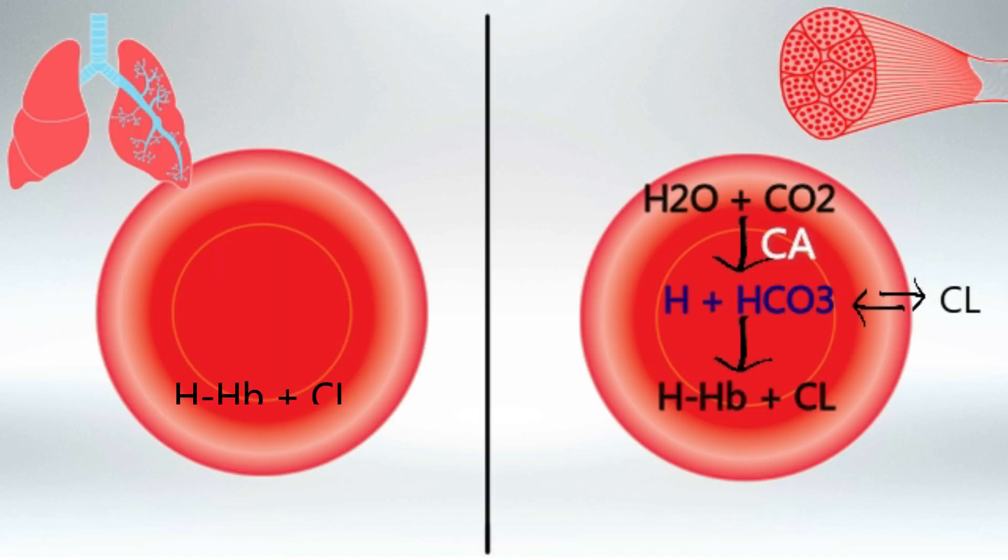The RBC will go into the lungs, and we will reverse the process. Hydrogen will be released from hemoglobin, and we call the release of hydrogen from hemoglobin Haldane effect.